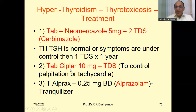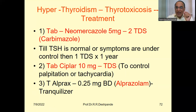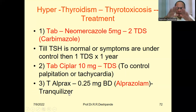For palpitation: tablet Ciplar — generic name Propranolol — 10 milligram, morning, afternoon, evening, to control palpitation or tachycardia. Then tablet Alprax — generic name Alprazolam — this is a tranquilizer to calm the mind. For example, Paracetamol is a generic name, while Crocine and Dolo are brand names. Alprazolam is given because when there is stress, the thyroid problem increases more.